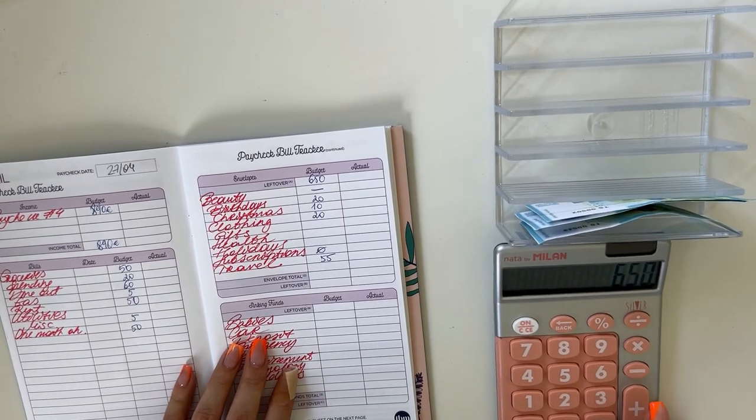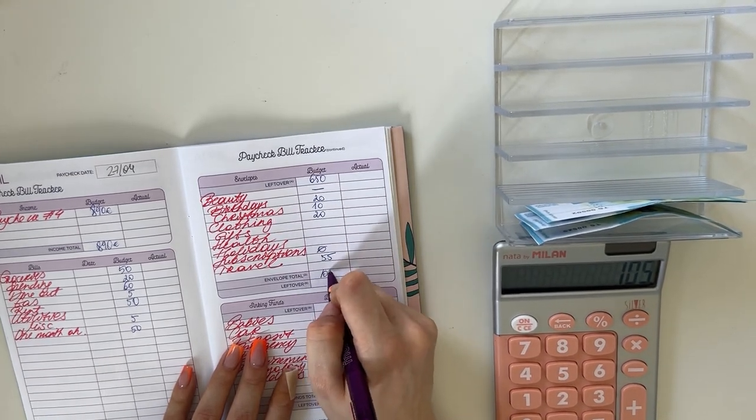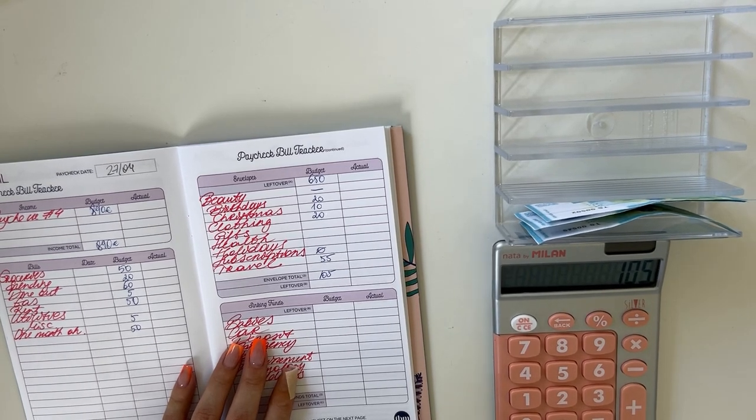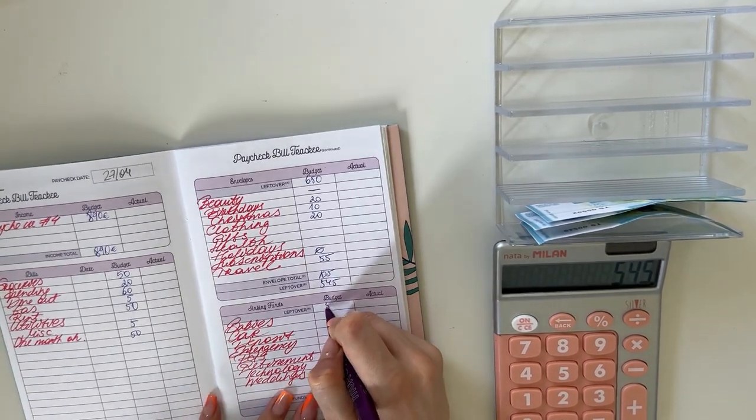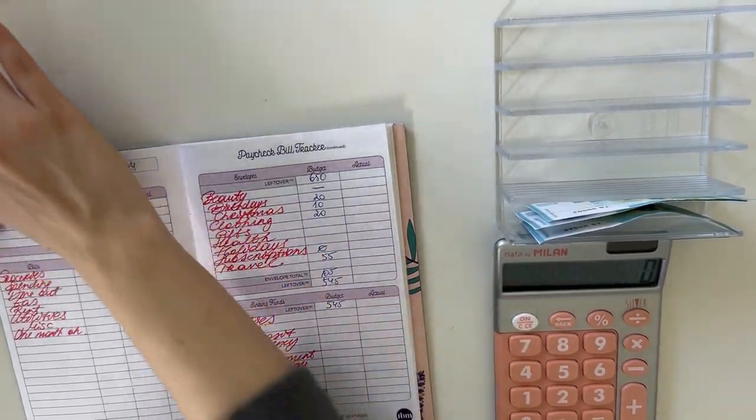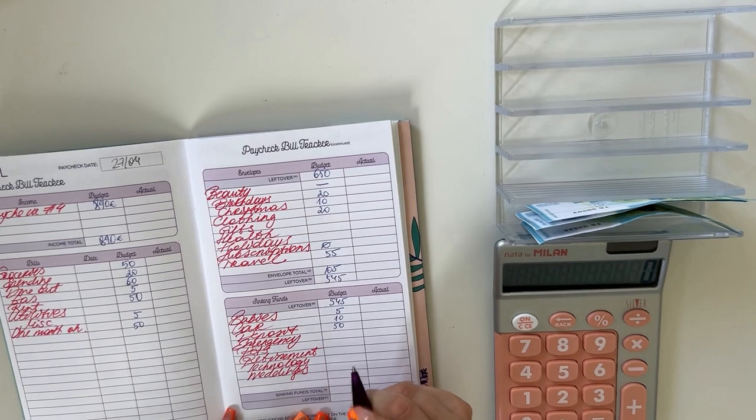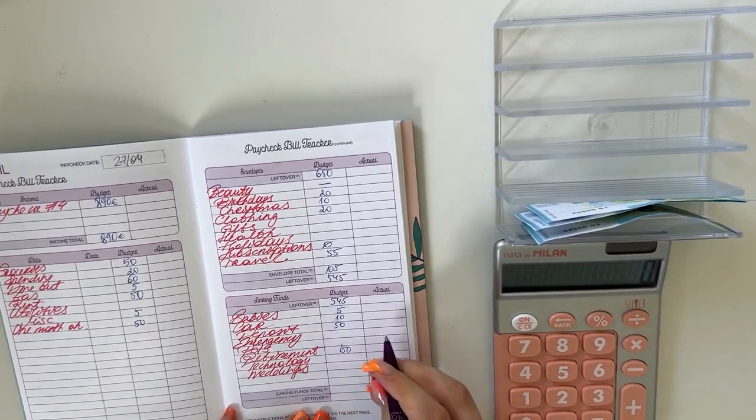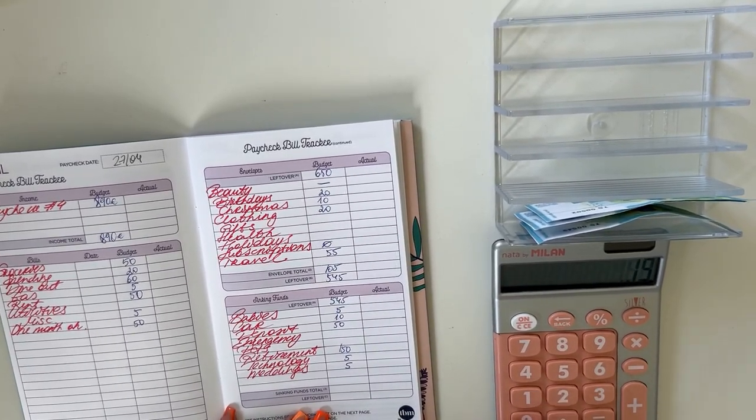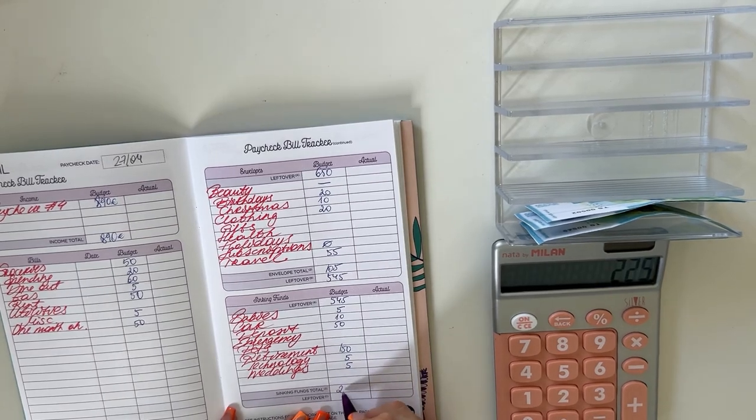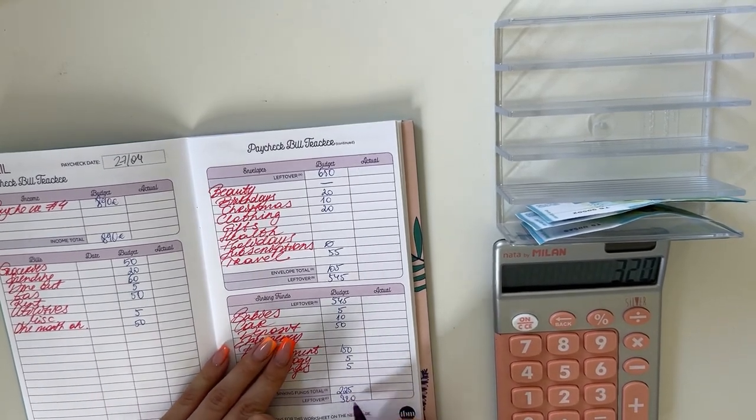In total for short-term sinking funds we're stuffing $105 only. So $650 minus $105 is $545. We're bringing that down here for long-term sinking funds. We're putting $5 into babies, $10 into car, $15 in deposit, $150 in retirement, $5 in technology and $5 into weddings. $225 into long-term sinking funds.